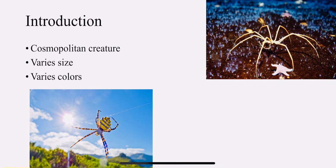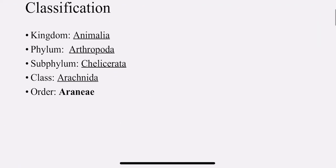The introduction: it is a cosmopolitan creature, which means it is found all over the world. Spiders are found all over the world and they vary in size and color. Now we will deal with different types of spiders — you can see the different colors and sizes. This classification: it belongs to the kingdom Animalia, phylum Arthropoda, subphylum Calyxereta, class Arachnidae, order Araneae.